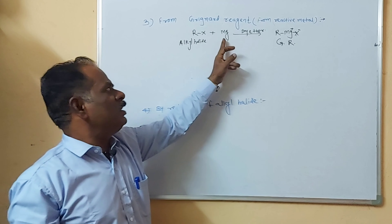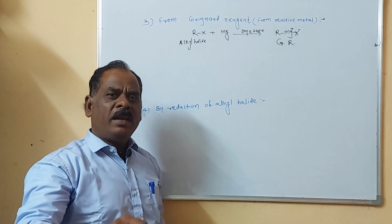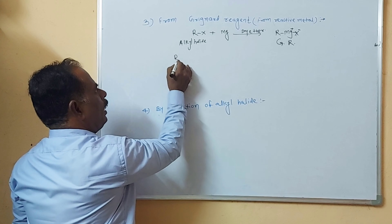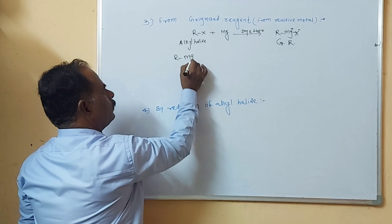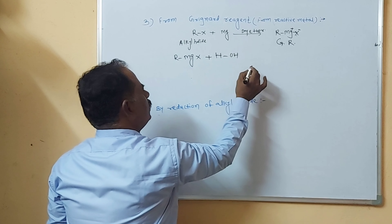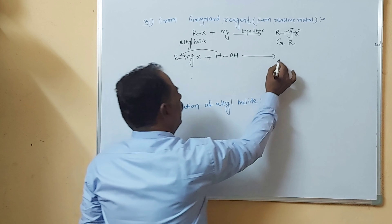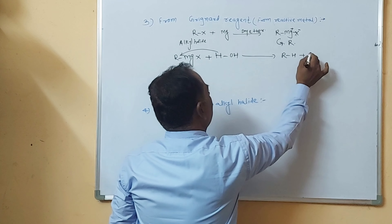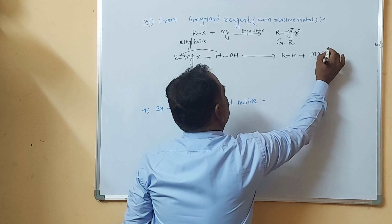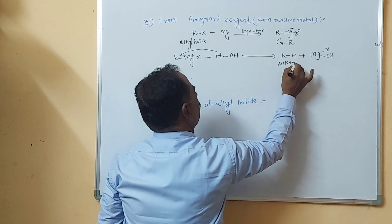The obtained Grignard reagent RMgX is treated with water (H₂O). Then the hydrogen atom forms a bond with the R group (alkyl group) to form an alkane, and it forms MgX-OH as a byproduct. This is the general reaction for the preparation of alkane from Grignard reagent.